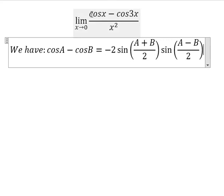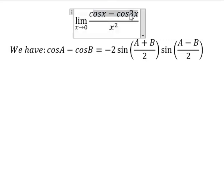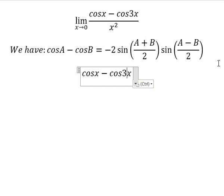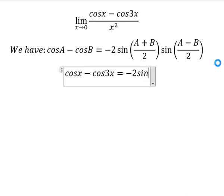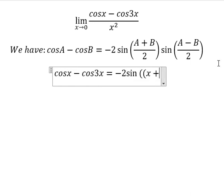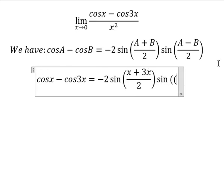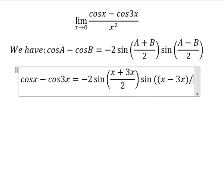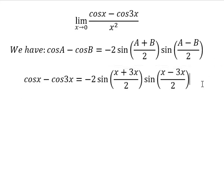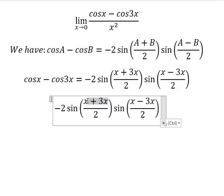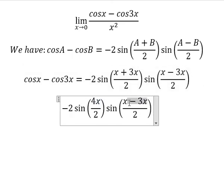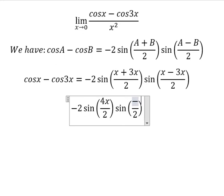Now we can apply the formula for this one. So we have x plus 3x over 2 and sine of x minus 3x over 2. So this one you got about 4x. This one we got about negative 2x.